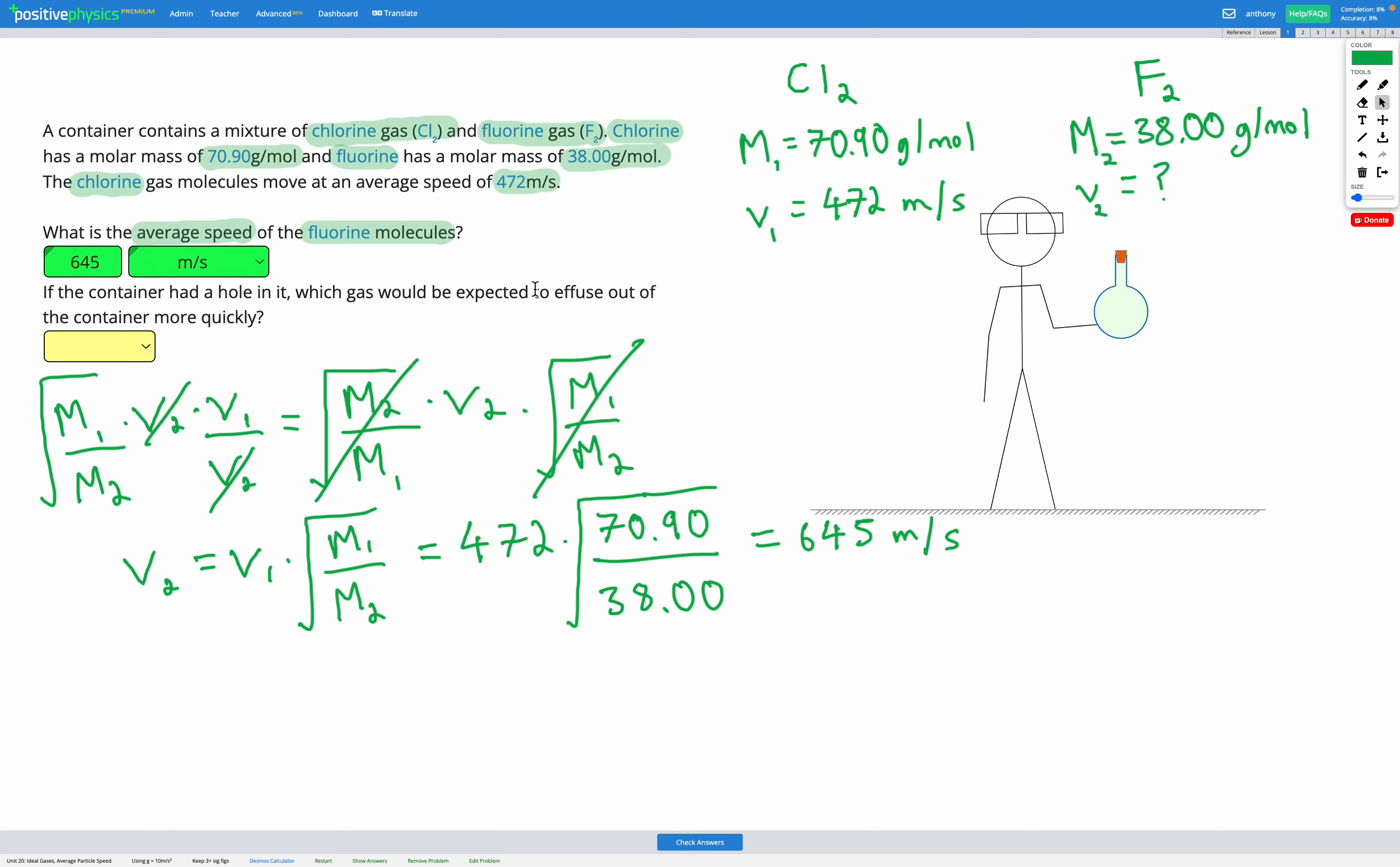Okay, so we found the average speed of fluorine molecules. Let's do a sense check. Assuming that these particles are at the same temperature in this container, we know that the kinetic energy of the chlorine and fluorine molecules on average should be the same. However, chlorine has a greater mass. And remember, kinetic energy is made up of both the mass and the velocity of our particles.